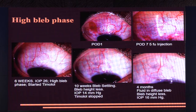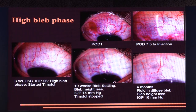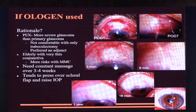An example of a high bleb phase at six weeks: pressure at 26 mmHg when it was previously fine. Start an aqueous suppressant such as timolol — here filtration is too much and the bleb is becoming encisted. By ten weeks the bleb is settling, height is less, and IOP is 14. Once it settles, taper the timolol, give a post-op 5-FU injection, and by four months the fluid is diffuse, bleb height is less, and pressure is 16 off drugs. Recognize this in time and it won't progress to a tense tenon cyst. Caution: if an ologen was used, this can look very similar to a tenon cyst — injecting 5-FU in that situation is very dangerous as it will sequester the 5-FU right there.